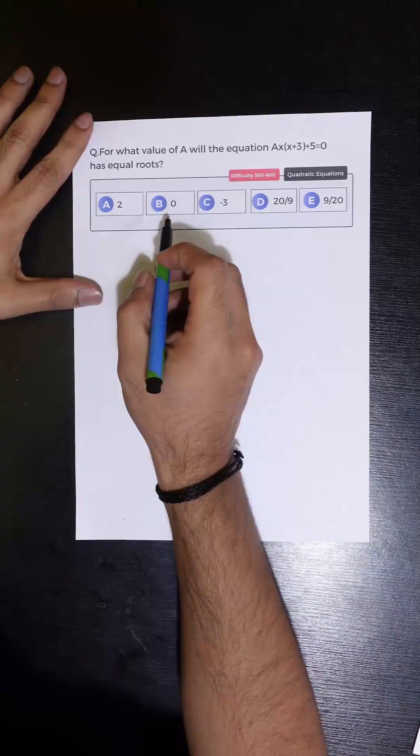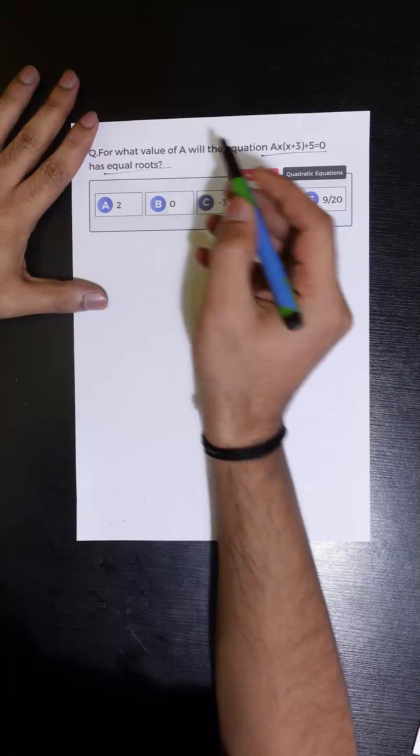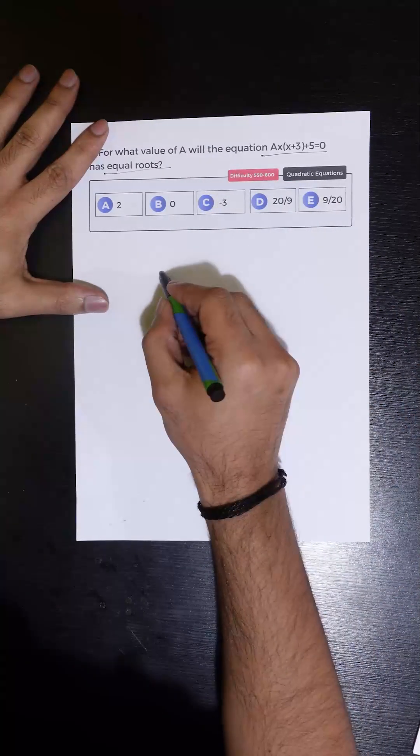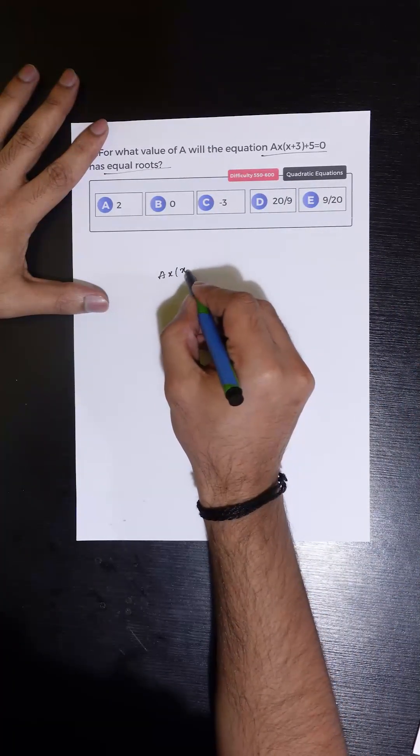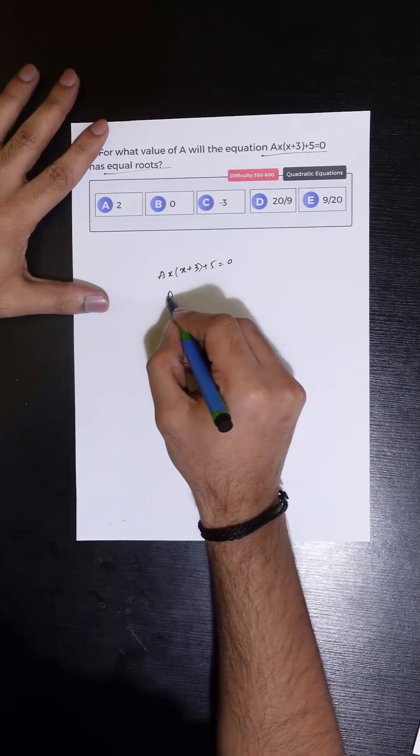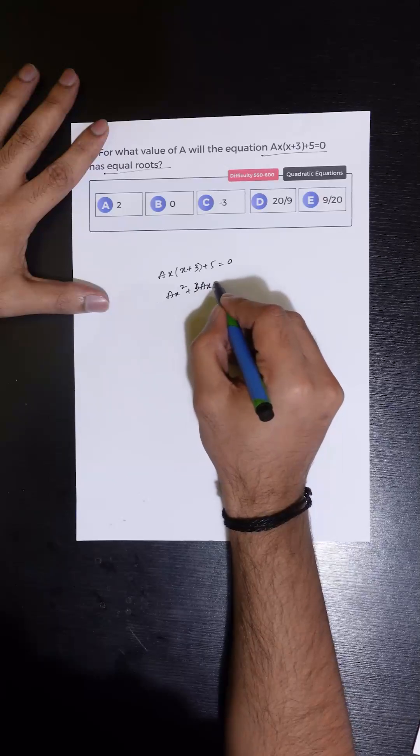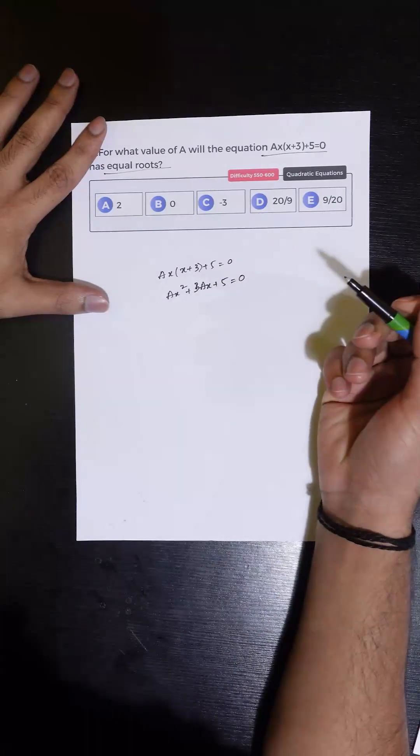Let us see how to solve this question. For what value of A will the equation have equal roots? The equation given is Ax into x plus 3 plus 5 is equal to 0. This is nothing but Ax square plus 3Ax plus 5 is equal to 0.